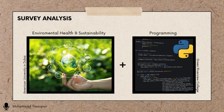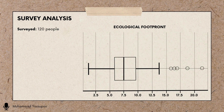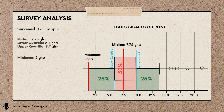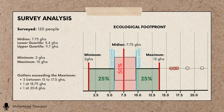As students specializing in environmental health and sustainability, our COIL partnership with U.S. students specializing in Python empowered us to conduct independent data analysis. Surveying a total of 120 people of various ages and ethnic backgrounds residing in either the UAE or USA, we found that the median ecological footprint is 7.75 GHA, with an interquartile range from 5.4 GHA to 9.7 GHA. The lower extreme is 2 GHA and the upper extreme is 13 GHA, with outliers ranging from 15–17.5 GHA, one at 18.75 GHA, and one at 20.8 GHA.